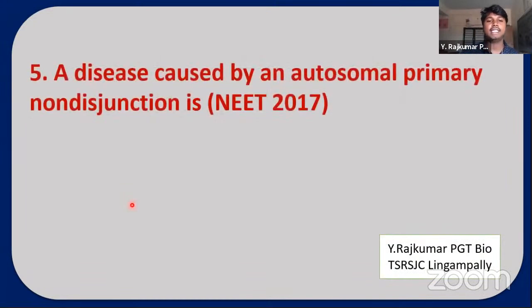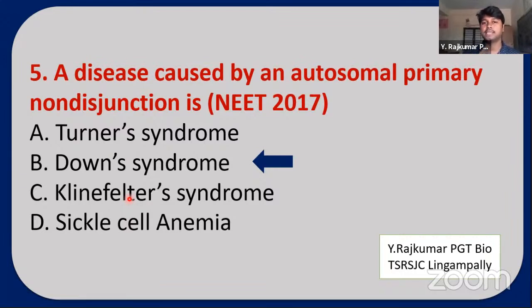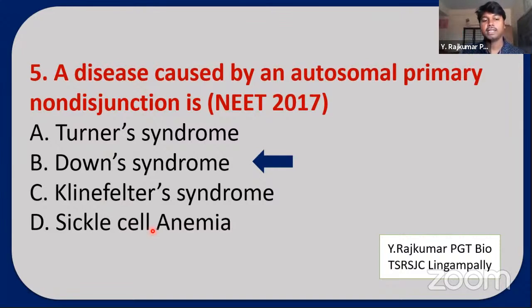Next NEET question: A disease caused by autosomal primary non-disjunction is: Turner's syndrome, Down syndrome, Klinefelter's syndrome, or sickle cell anemia? The answer is Down syndrome. Turner's and Klinefelter's syndromes are caused by disorders in allosomes (sex chromosomes), whereas Down syndrome is caused by trisomy of the 21st chromosome, which is an autosome. Sickle cell anemia is caused by point mutation — alteration in the gene — not chromosomal addition or removal.